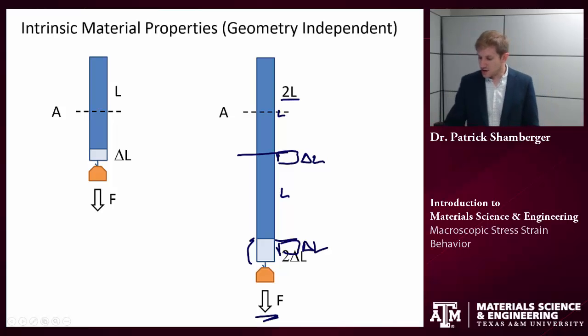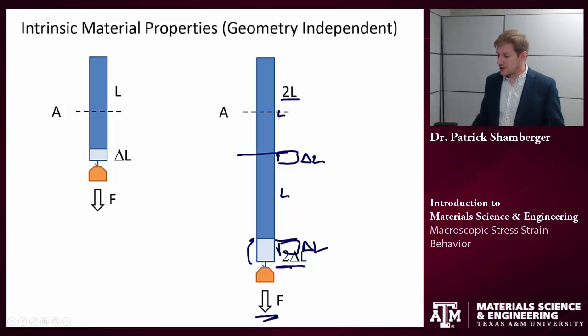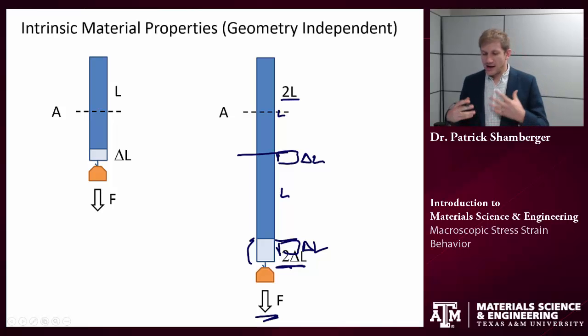When I add that together, I end up with a total elongation of 2 delta L. I'd like to normalize for this geometric factor. I'd like to work in dimensions where I can talk about intrinsic material properties rather than the geometry of the material.